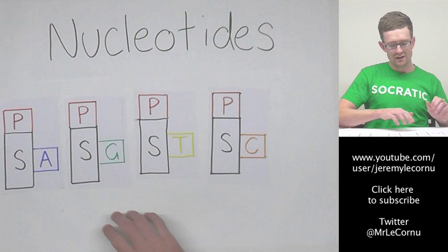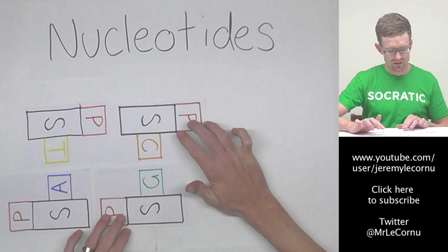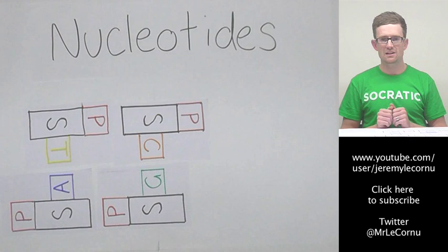And the way that works is A always pairs up with T, and G always pairs up with C. We call that complementary base pairing, and that is exactly how it works.